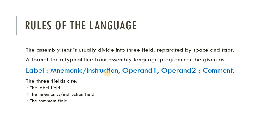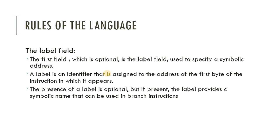The first is the label field — it is an optional field used to specify a symbolic address. A label is an identifier assigned to the address of the first byte of the instruction in which it appears. The presence of a label is optional, but if present it provides a symbolic name that can be used in a branch instruction, giving an identity to the instruction.